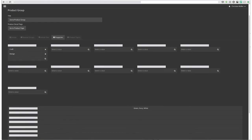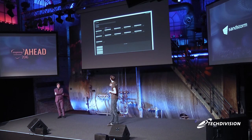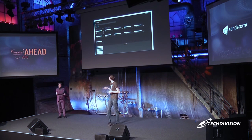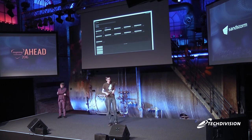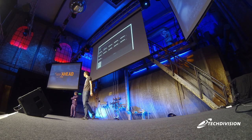You can write custom backend modules — something I've seen used in many projects. It's a small Flow application wrapped inside the NEOS backend. You can use it for all kinds of custom configurations, settings, or code — for instance, a complex product scheme configuration.